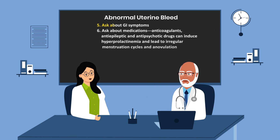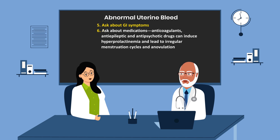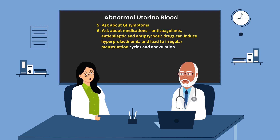You should also ask about GI symptoms, because some patients may see spotting in the underwear and assume it's from the vagina, not realizing it might be from the rectum. And of course, ask about medications. Anticoagulants, antiepileptic, and antipsychotic drugs can induce hyperprolactinemia and lead to irregular menstrual cycles and anovulation.